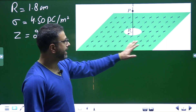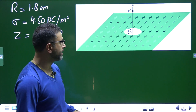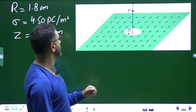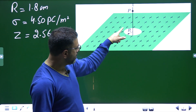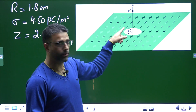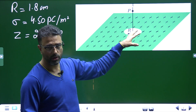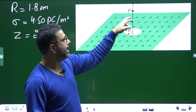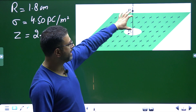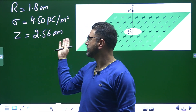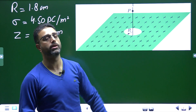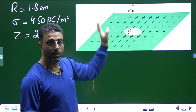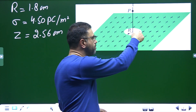So we have an infinite positively charged sheet with a uniform surface charge density of 4.5 picocoulombs per meter squared, and there is a circular hole carved out of this sheet. From the center of the circular hole, perpendicular to the sheet, we have the Z-axis. On the Z-axis at point P at a distance Z of 2.56 centimeters from the center, we need to find the field due to this charge sheet without the circular portion.